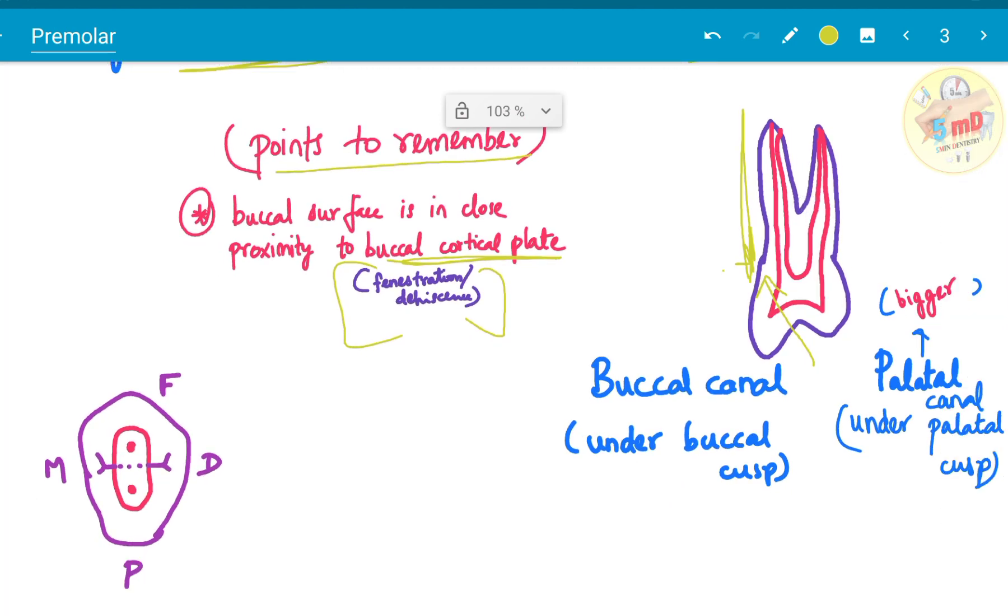The buccal canal is under the buccal cusp. Palatal canal is under the palatal cusp and it is bigger in dimension. So it is straight under the cusp.